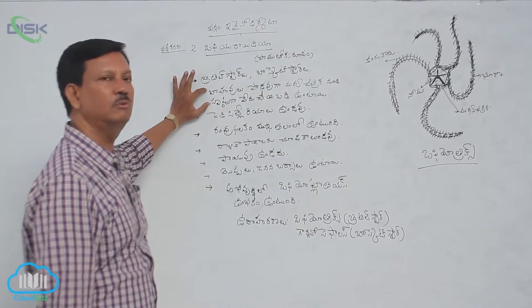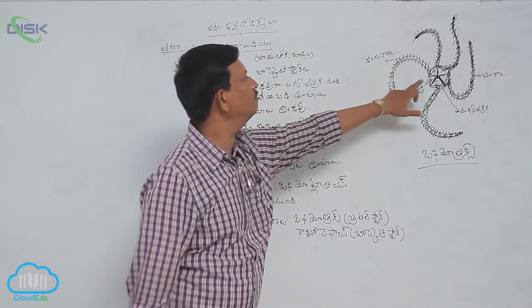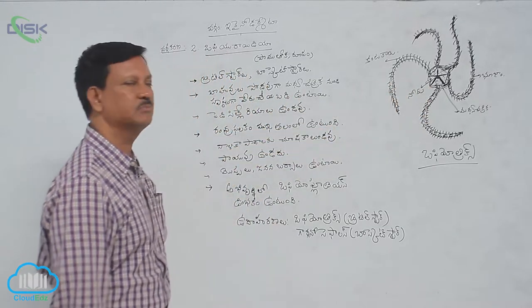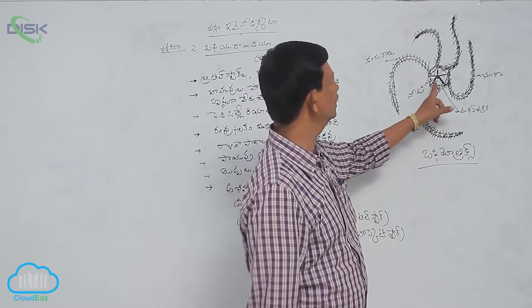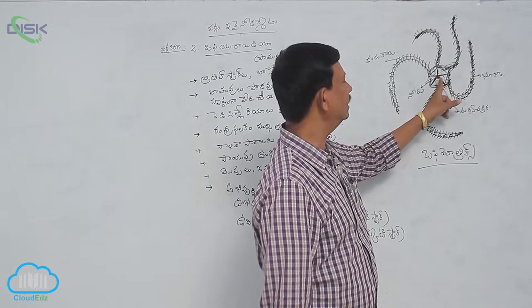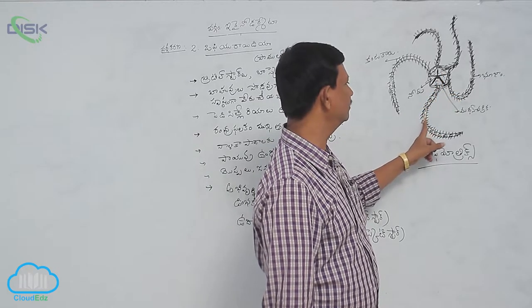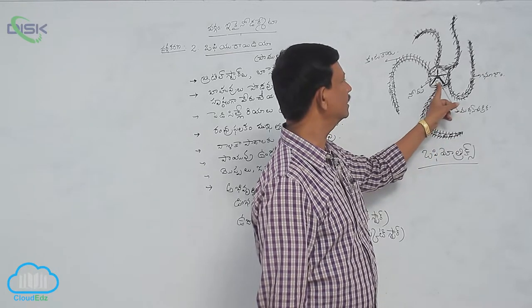These are deuterostomes. There is no coelom in this group; the body displays the material in the body and its structure.